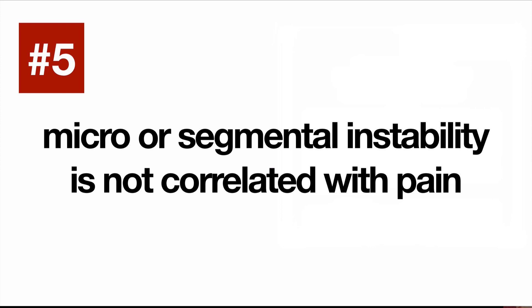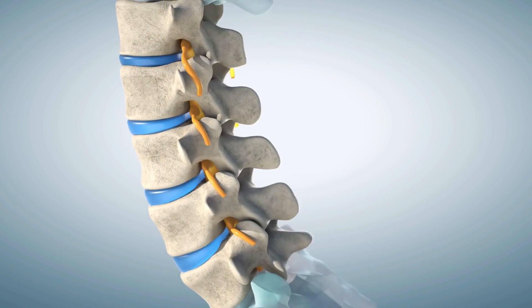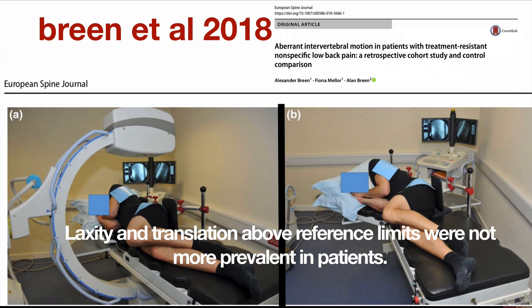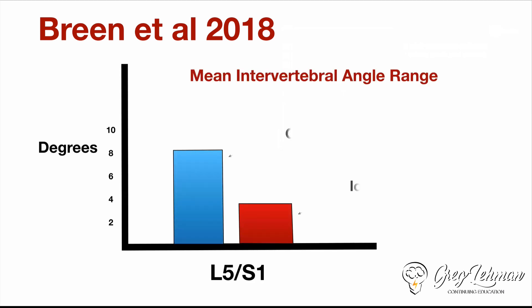Number five: the idea of micro or segmental instability — when you can actually measure it — does not seem to correlate with pain. This means one little joint is theoretically moving more or differently than all the other joints. When measured with fancy equipment, as in Brane et al. 2018, we do not see that people with low back pain have more laxity or more translation. In fact, we sometimes see the opposite: those with low back pain have less movement at L5-S1.